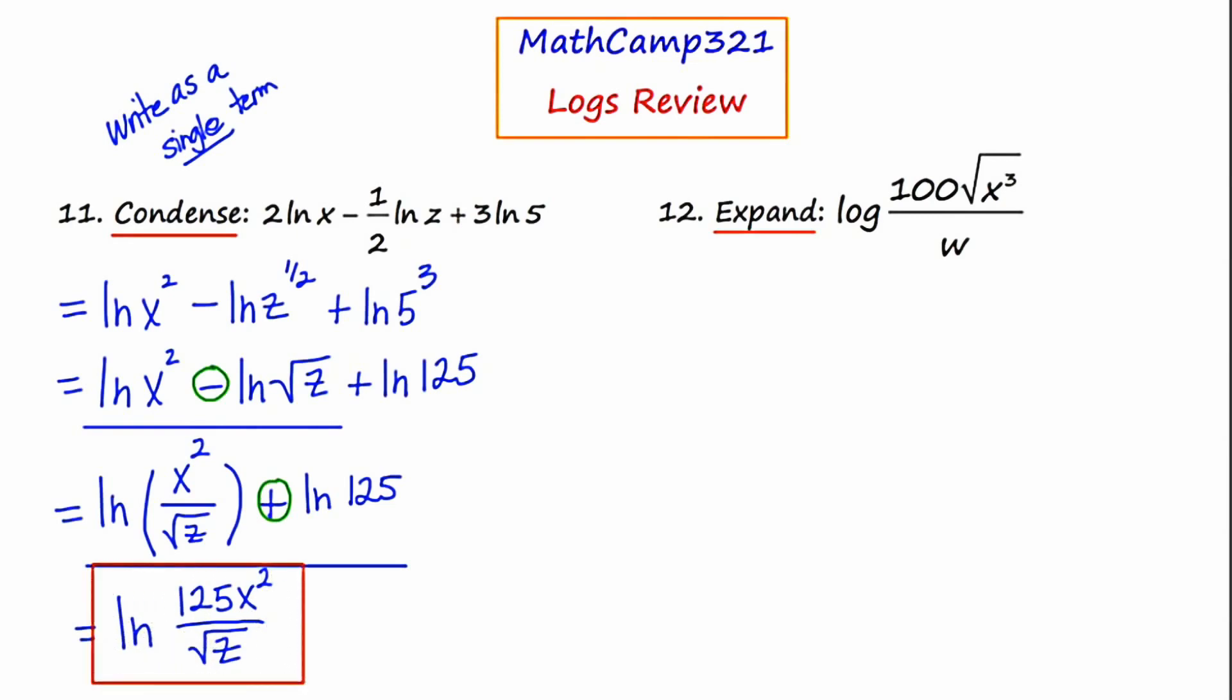Now I'm going to go in the opposite direction in number twelve and expand. We've got the log of this big fraction. The first thing I'm going to implement is the quotient rule. I'm going to write this as the log of the numerator minus the log of the denominator. The final term, log W, there's nothing to do there. But our first expression, we have 100 times X to the three halves. We've got the log of a product, which means I can further expand that into a sum.